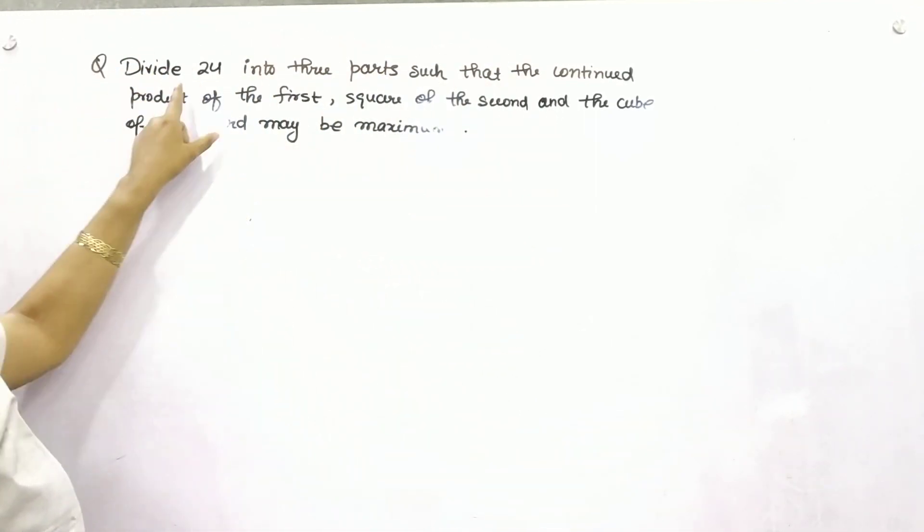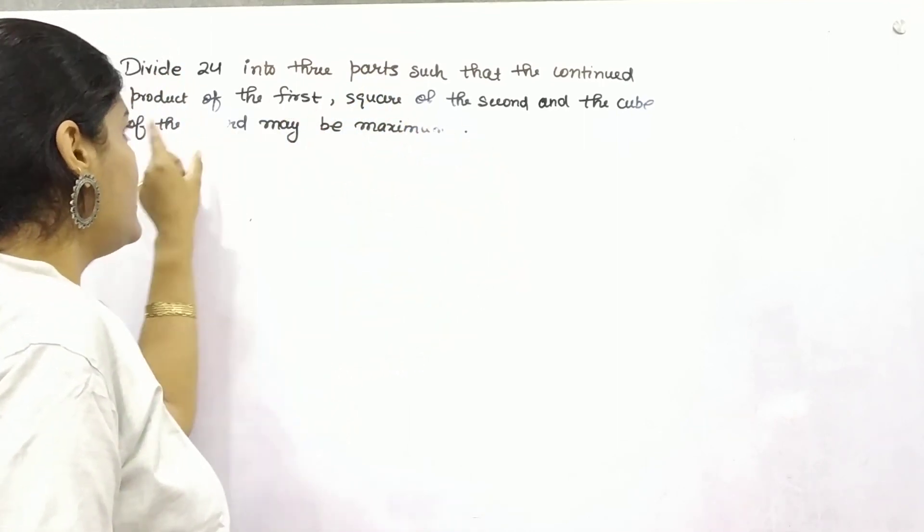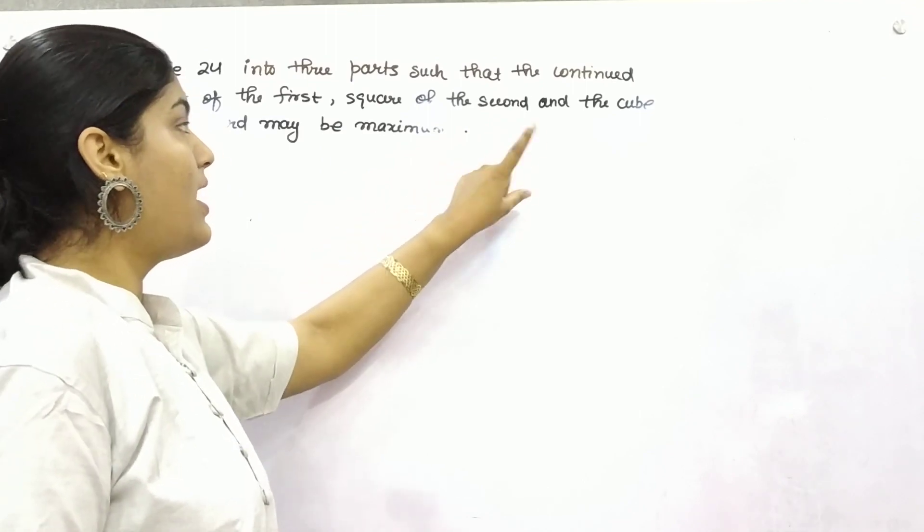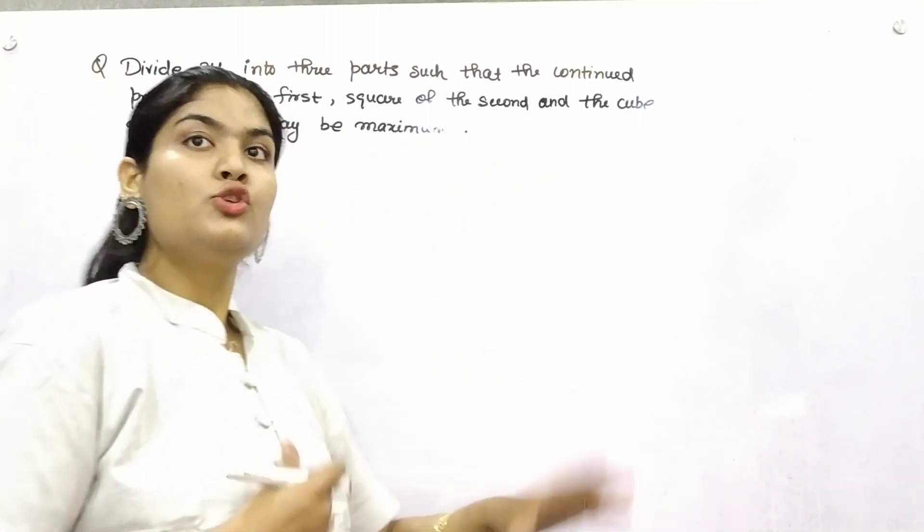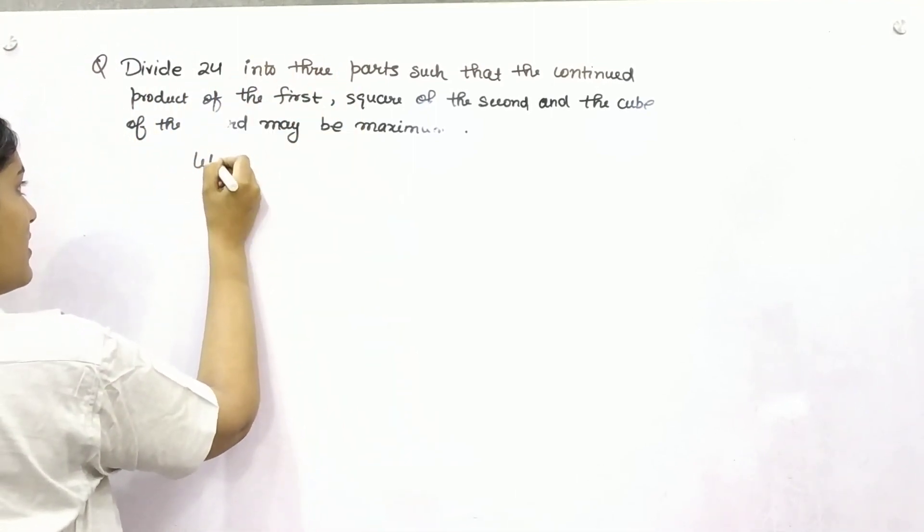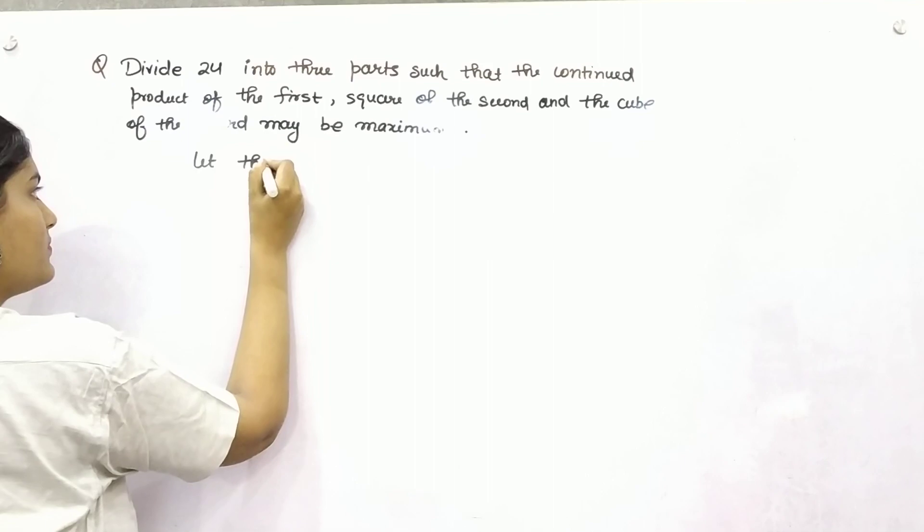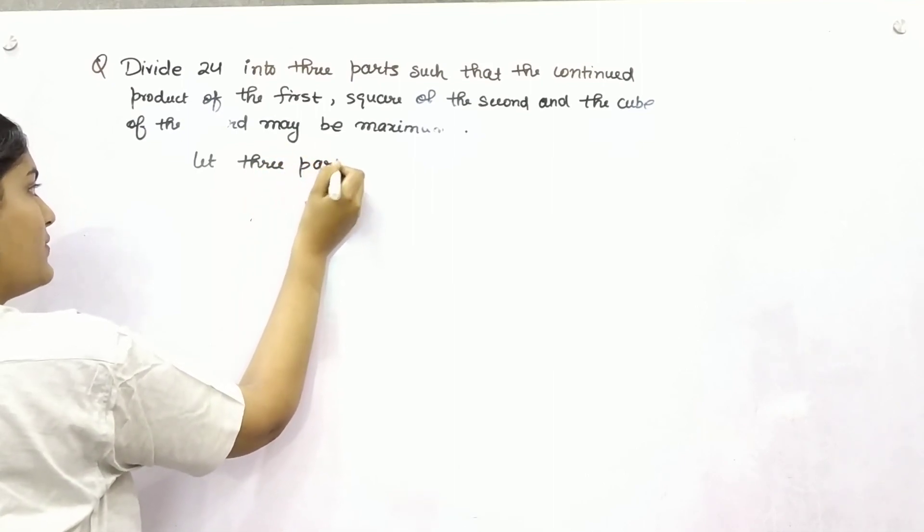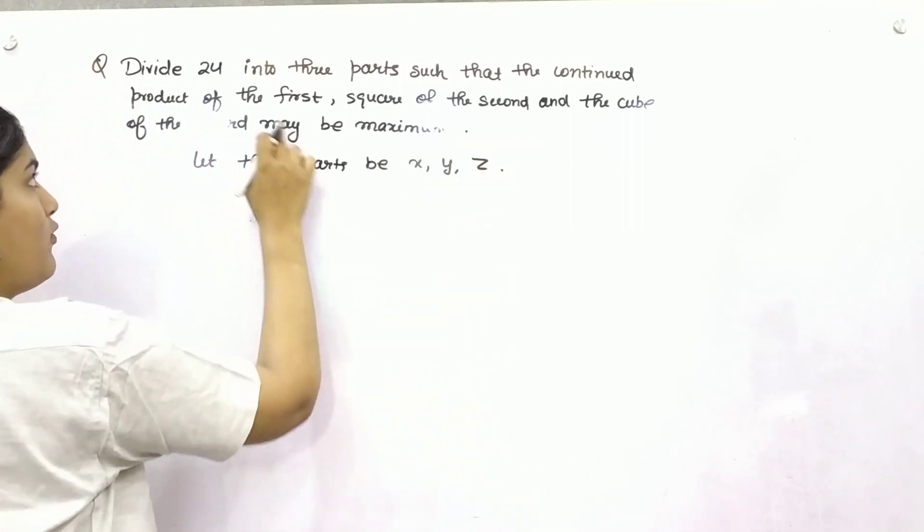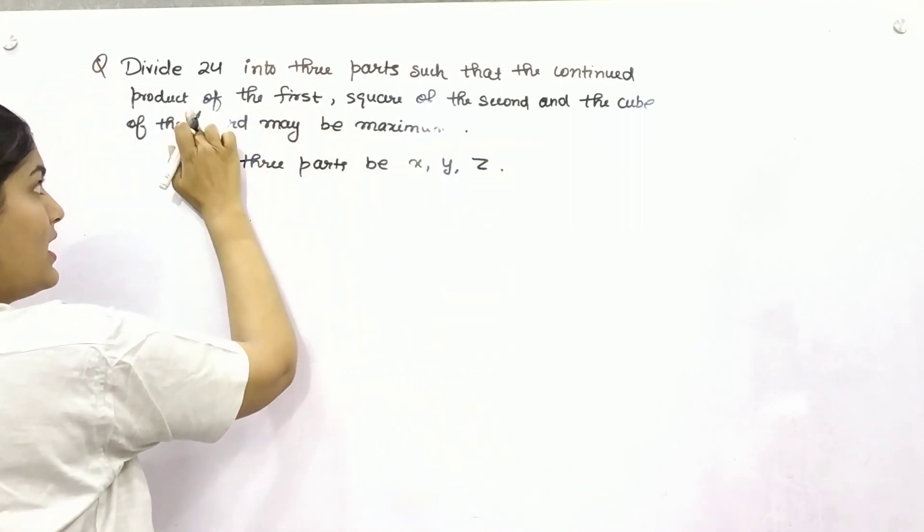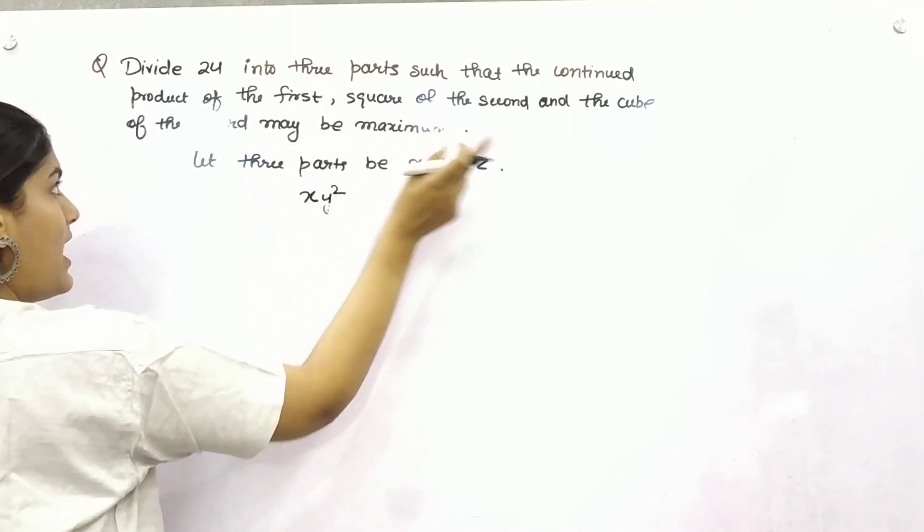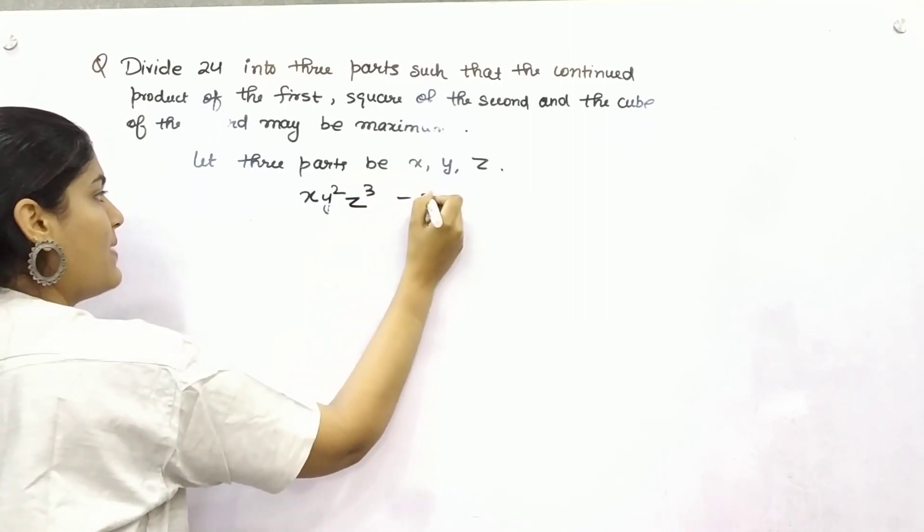You can see that divide 24 into 3 parts such that the continuous product of the first, square of the second, and the cube of the third may be maximum. So what can be the function now? Because it is divided into 3 parts, so let's say 3 parts be x, y, and z. Now according to question, what is it saying? That product of first, square of the second, and cube of the third is maximum.